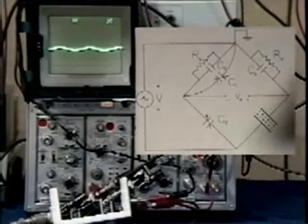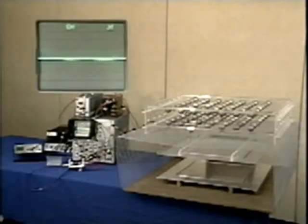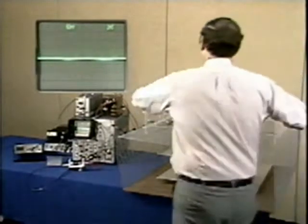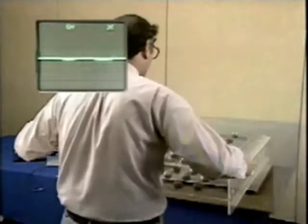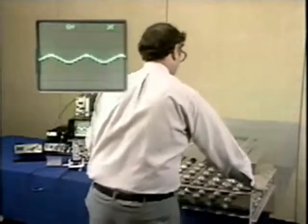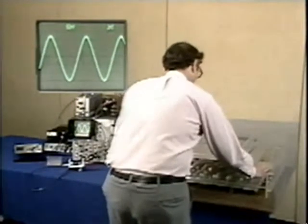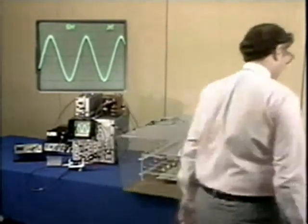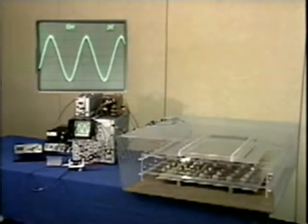We're ready to insert the artificial dielectric. As the array is inserted, the bridge becomes unbalanced, indicating that the capacitance has changed. We measure a voltage of 135 millivolts peak.